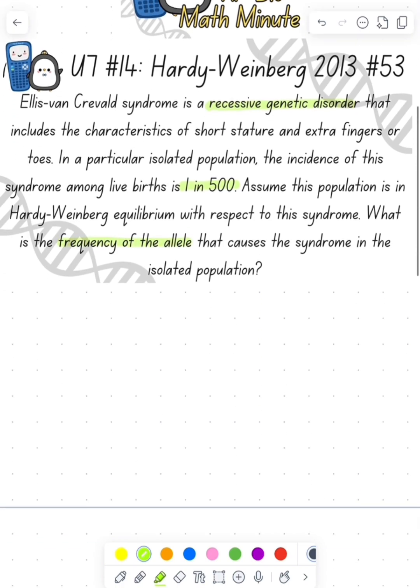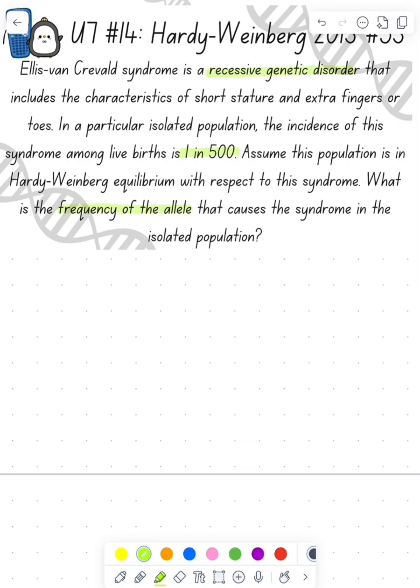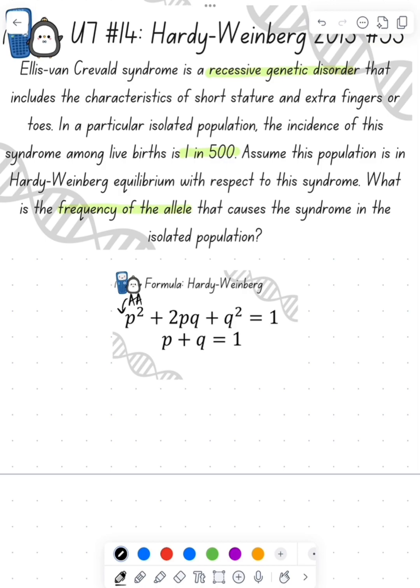Looking at our equation, we know that p² is the frequency of our homozygous dominant, 2pq is the frequency of our heterozygous, q² is the frequency of our homozygous recessive, and then p is the frequency of the dominant allele and q is the frequency of the recessive allele.